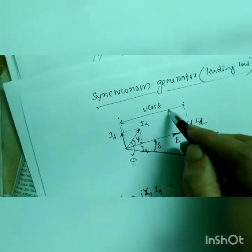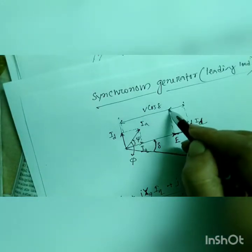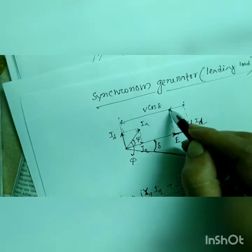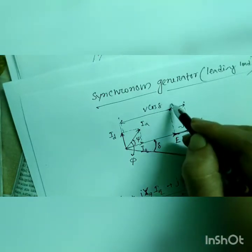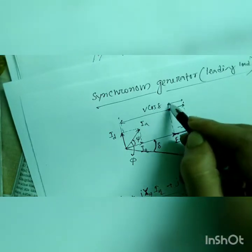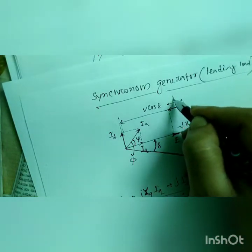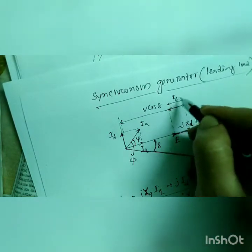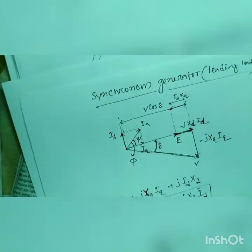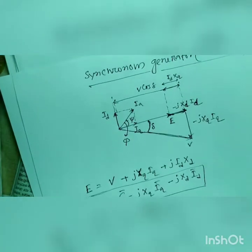And this length is, sorry, this total length is v cos delta and this length, this length is idxd.